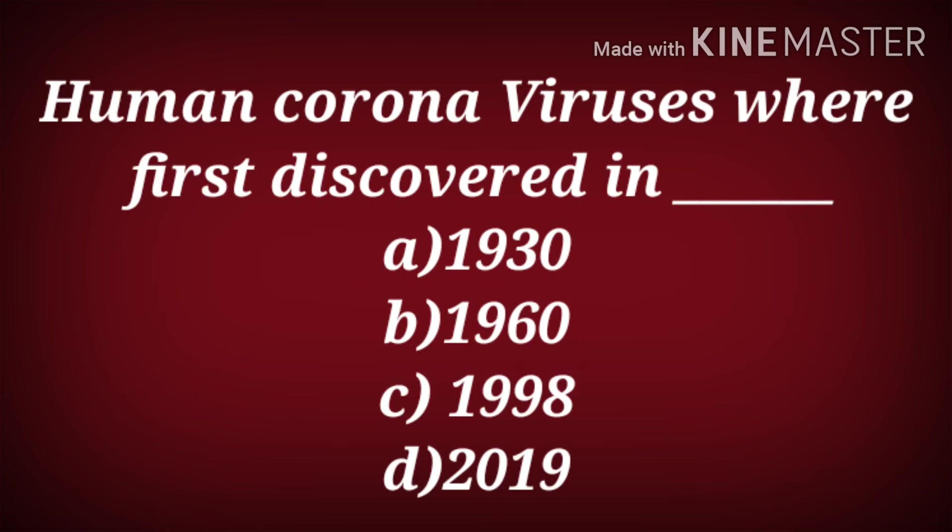Human coronaviruses were first discovered in which year? Was it in 1930, 1960, 1990, 1998, or 2019? The correct answer is 1960.